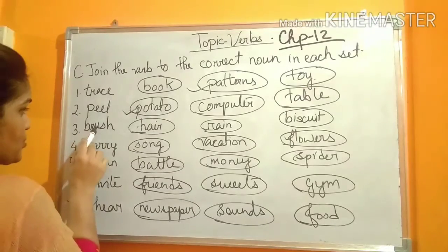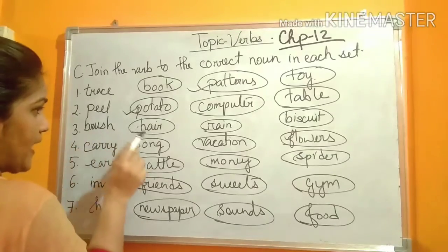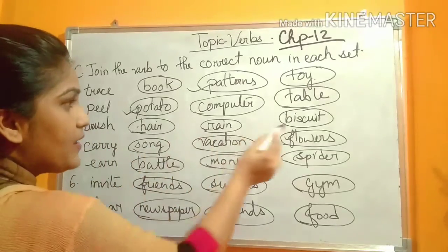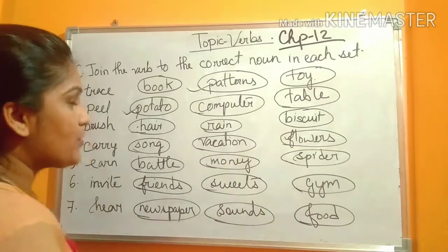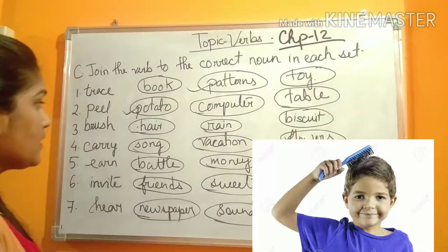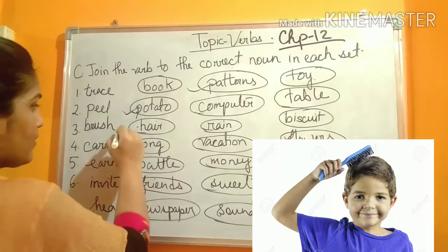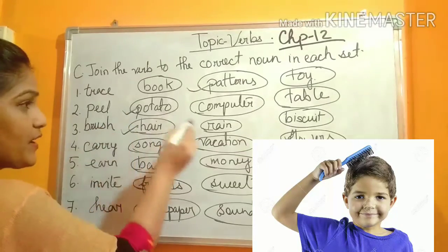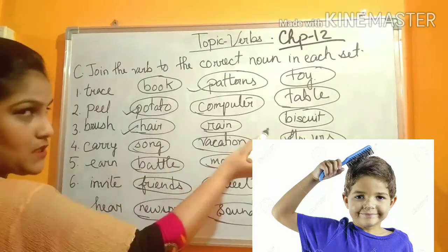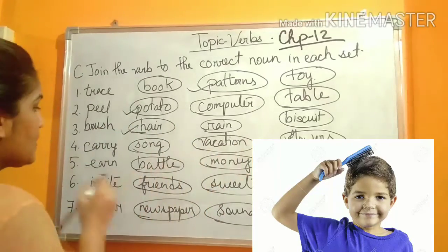Number three: Brush. Brush what? Hair, rain, or biscuit? Which one will be the correct one? Hair. Because you cannot brush rain or a biscuit.